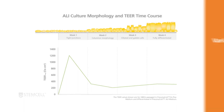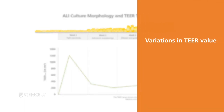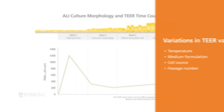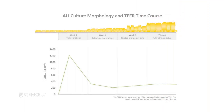Variations in TEER value can be due to temperature, medium formulation, cell source, and the passage number of the cells in culture. For an ALI culture generated using PneumaCult, the value ranges from 200 to 800 ohms centimeters squared at day 28.